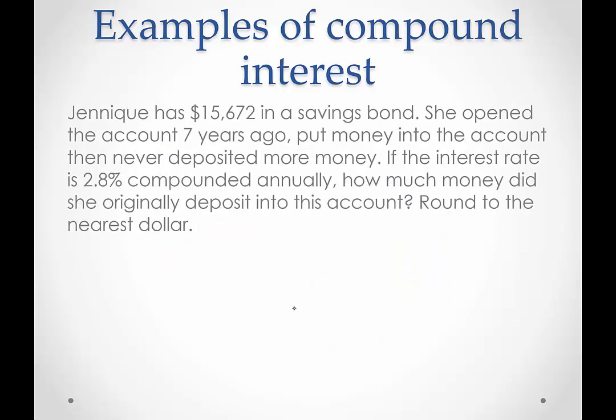All right, what about Janique? Janique has $15,672 in a savings bond. She opened the account seven years ago, put money into the account, then never deposited more money. We're going to assume she didn't take anything out either. If the interest rate was 2.8% compounded annually, how much money did she originally deposit into this account? Round to the nearest dollar. Okay, so in this case, this represents the future value. So we have a future value of $15,672. She opened the account seven years ago, so we have time is 7. And the interest rate on this account was 2.8%, which we want to convert to its equivalent decimal, 0.028.